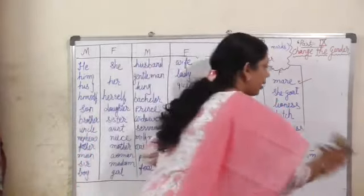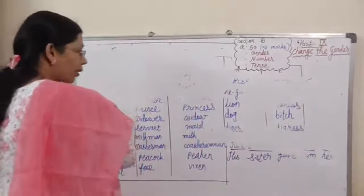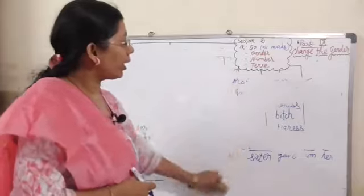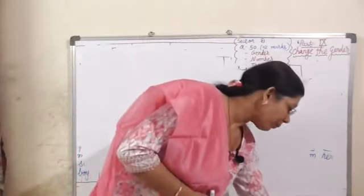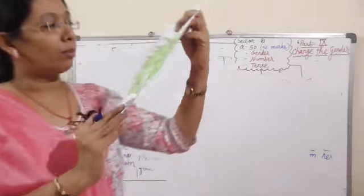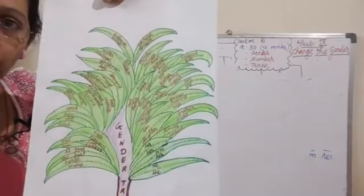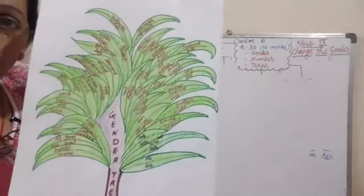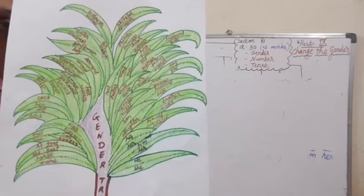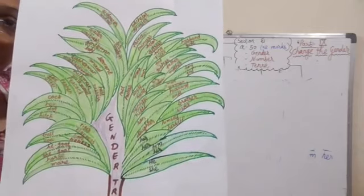Now, let's see some paragraphs. We will understand this point through paragraphs. Now a masculine-feminine table has been given. You can make a small chart and write it down. You can add as many pronouns and nouns in masculine and feminine as possible. In this way you can prepare a chart.